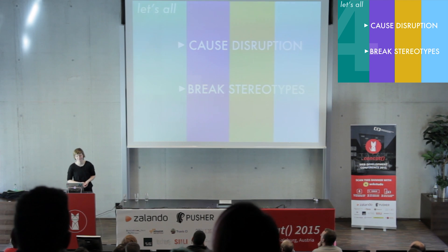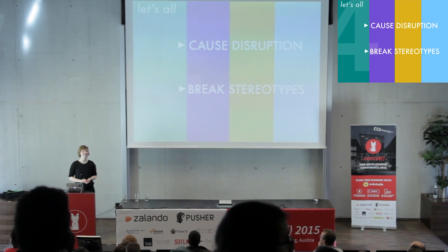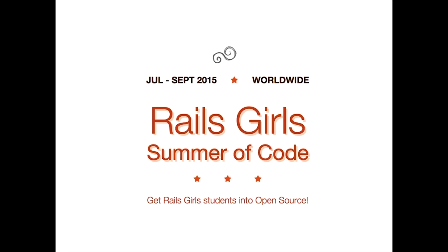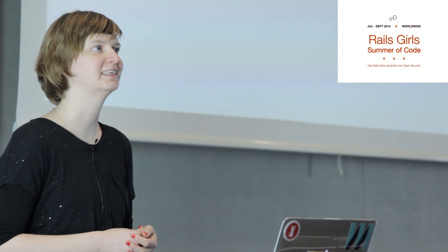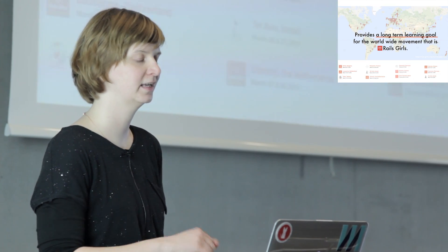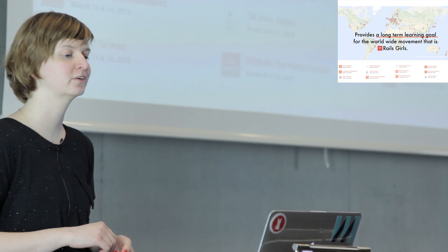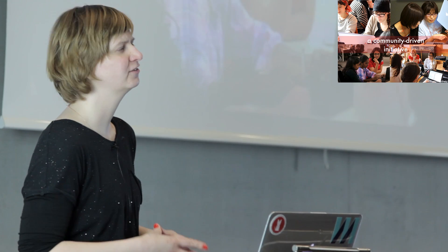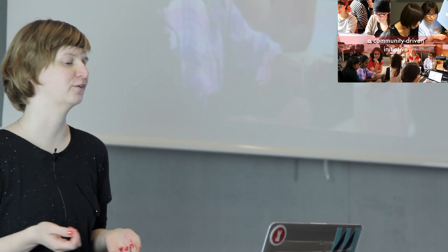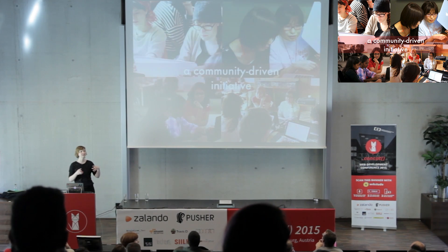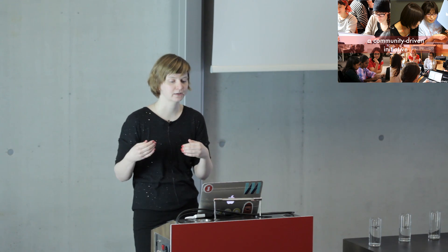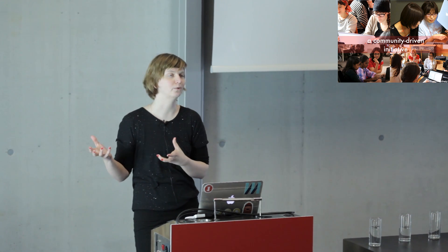To show you a great example of how we are implementing this and changing the future of open source, let me tell you a summer story — a story about Rails Girls Summer of Code. Rails Girls Summer of Code is a scholarship program that enables women to work on open source projects in any language. It provides a long-term learning goal for the worldwide movement that is Rails Girls. It started off as wishful thinking of some Rails Girls coaches and organizers who wanted to give Rails Girls students a perspective after attending the beginner workshop and falling in love with programming.